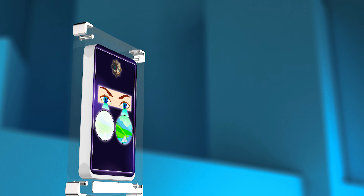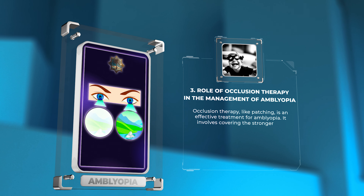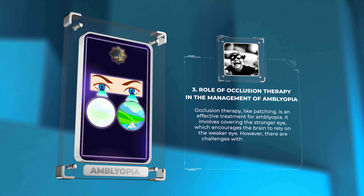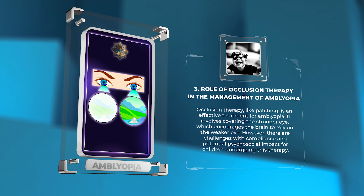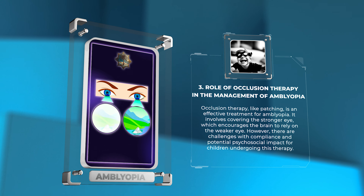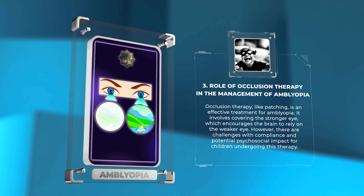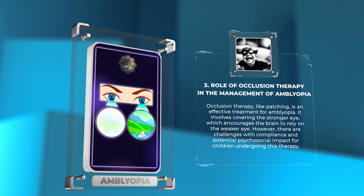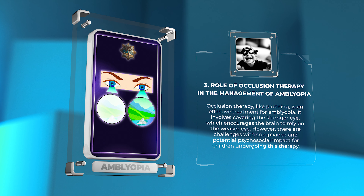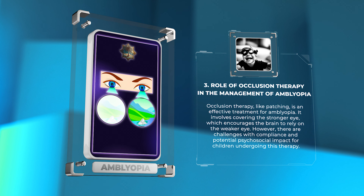Occlusion therapy, like patching, is an effective treatment for amblyopia. It involves covering the stronger eye, which encourages the brain to rely on the weaker eye. However, there are challenges with compliance and potential psychosocial impact for children undergoing this therapy.